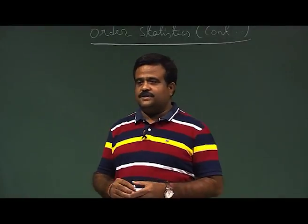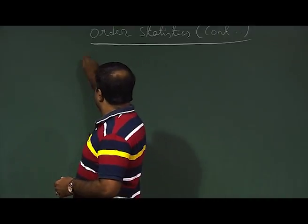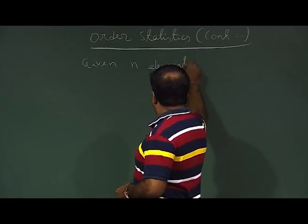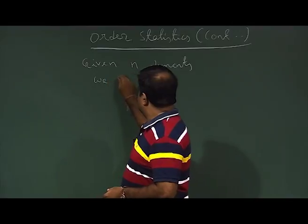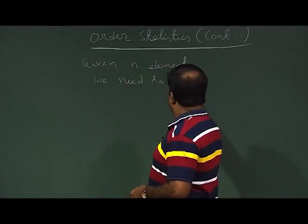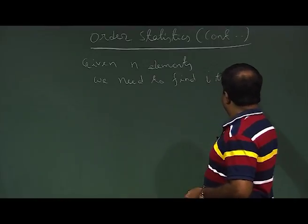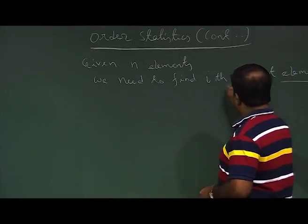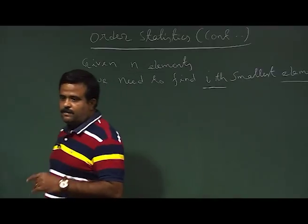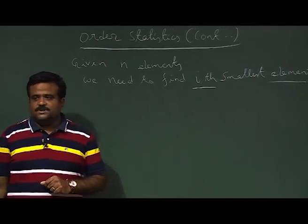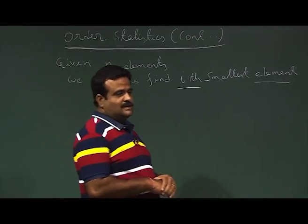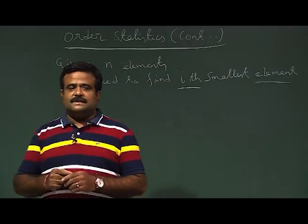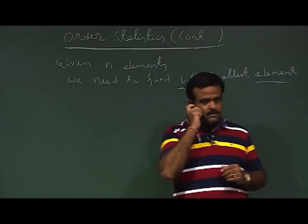We are talking about the order statistics problem. The problem is: given n numbers, find the i-th smallest element. Here i is any index from 1 to n. If i equals 1, this is the minimum; if i equals n, this is the maximum; and if i equals n/2 in sorted order, it is called the median. We have seen the select algorithm, which uses the partition algorithm.